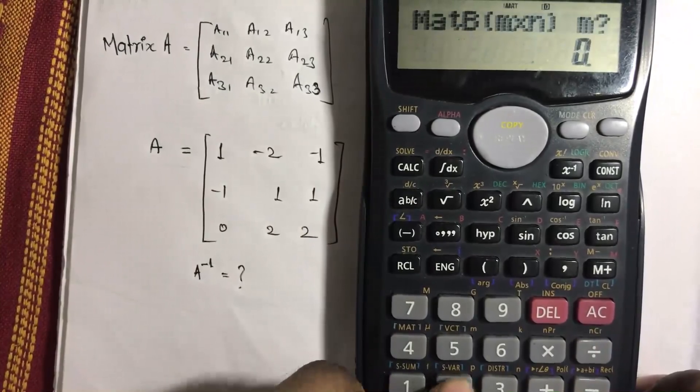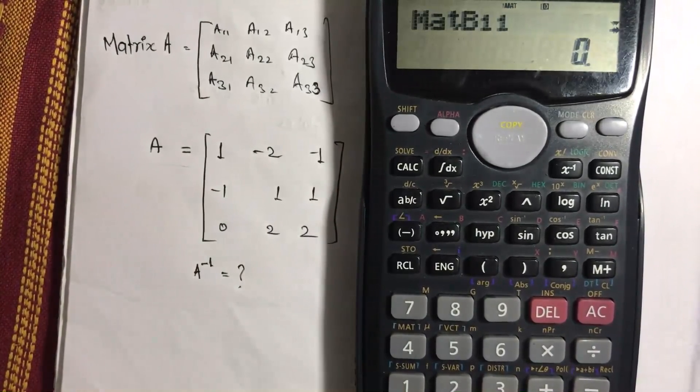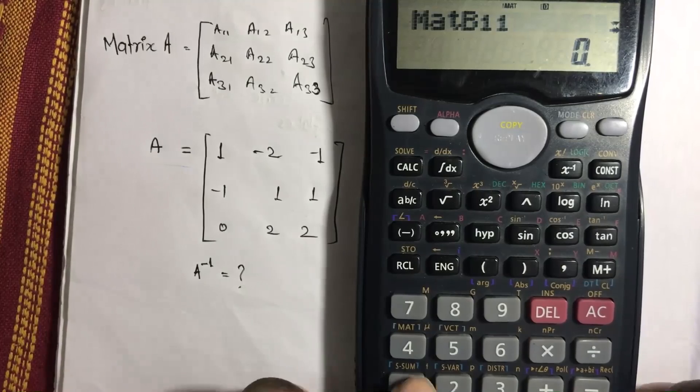A matrix B with a dimension of 3 into 3. Yeah, so matrix B 1,1, let's take a particular: 1, 2, 3, 4, 5, 6, 7, 8, 9.